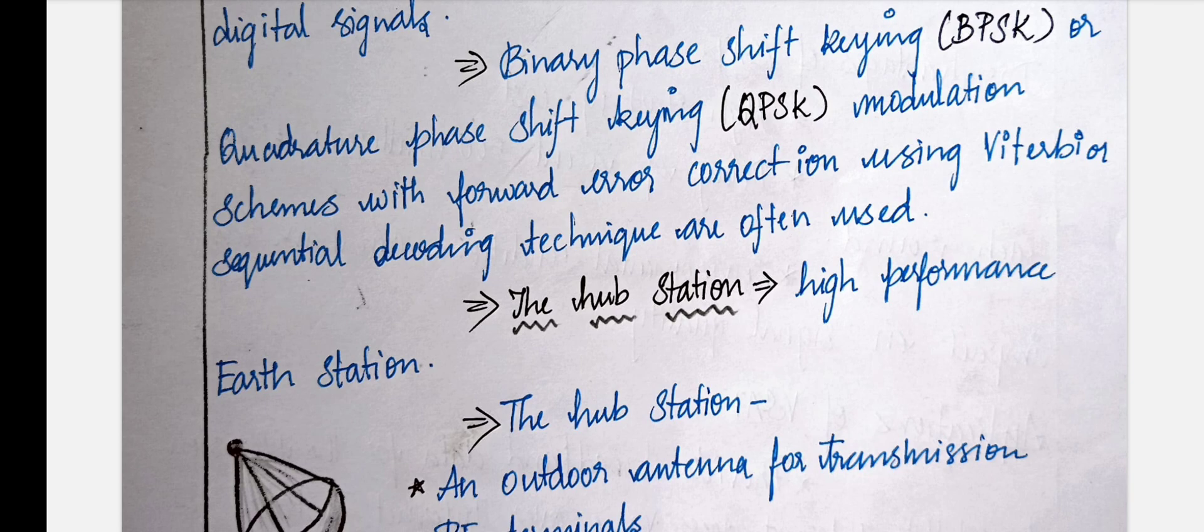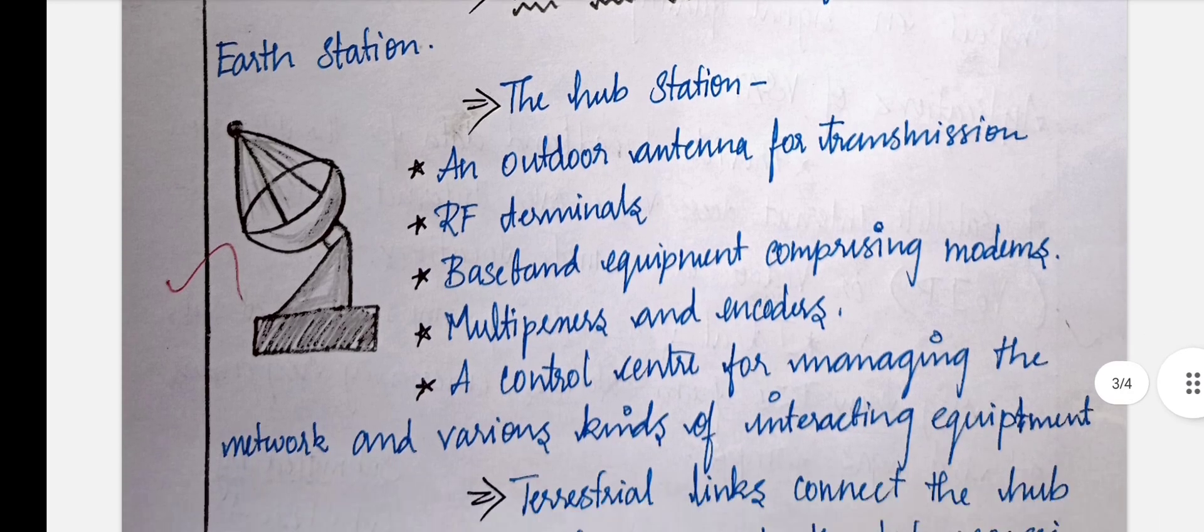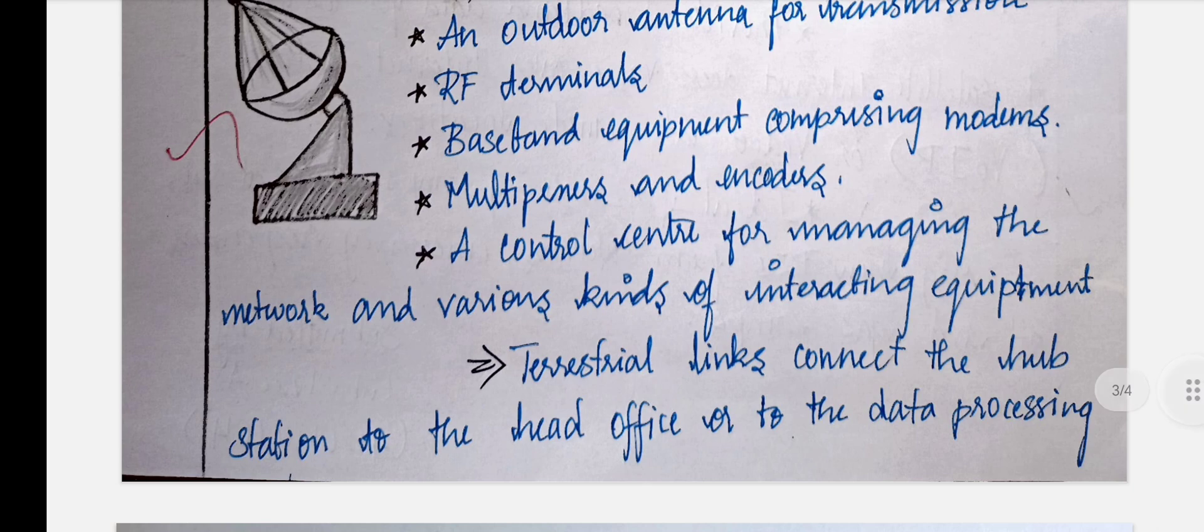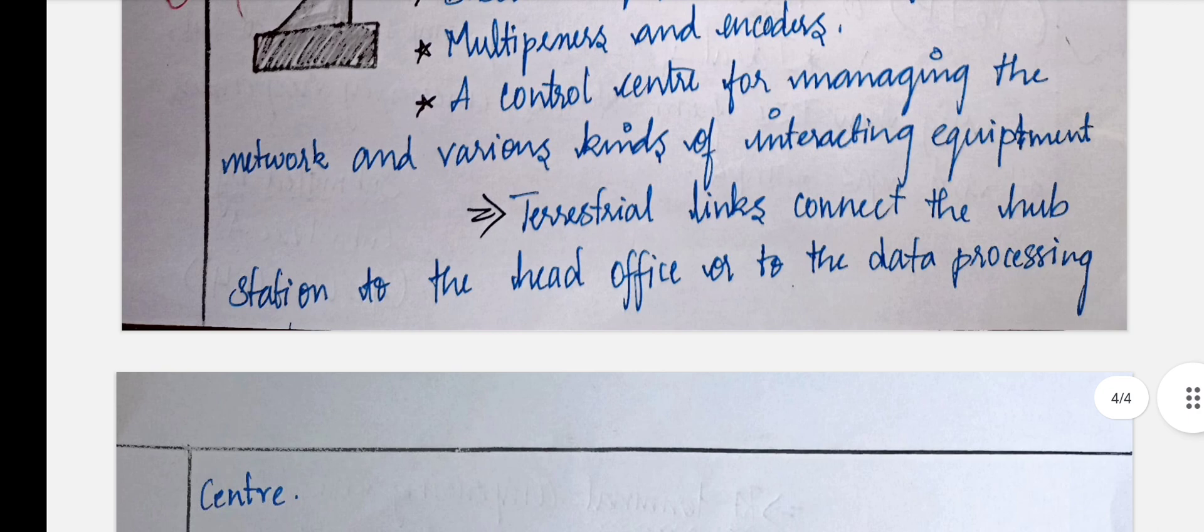The hub station is the earth station. The earth station consists of an outdoor antenna for transmission, RF signals, and baseband equipment comprising modems, multiplexers, and encoders. It has a control center for managing networks and interacting equipment.